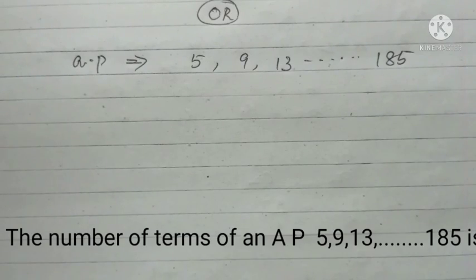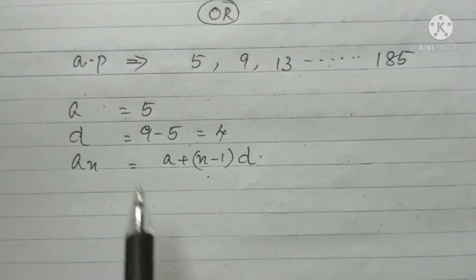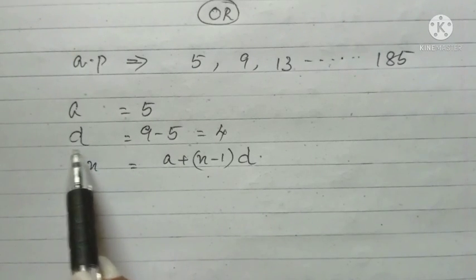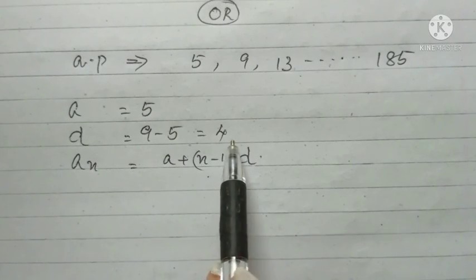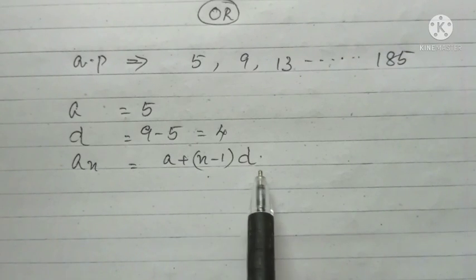The continuation of that question, there is another question. The number of terms of an AP 5, 8, 13, etc., to 185 is dash. In the question paper, the option was given, but there is no correct answer. I will explain the terms. Here, the first term is 5. Common difference is second term minus first term, it will be 4. And the nth term formula is A plus n minus 1 into D.